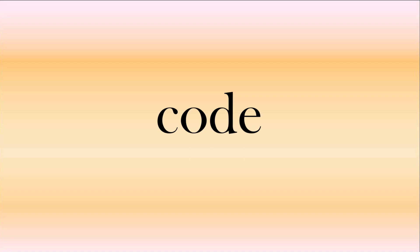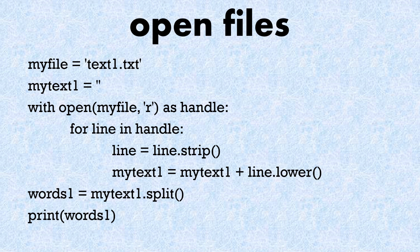Let's look at some code. We open a file called text one - my text one starts as an empty string. We open it as a handle and use a for loop for each line. We strip the new line character, add each line into the text, and use dot lower to make the text lowercase so we can compare it. We then split that text into a list called words one. We do exactly the same for the second text, putting it into my text two and those words into words two.